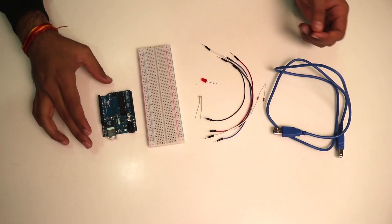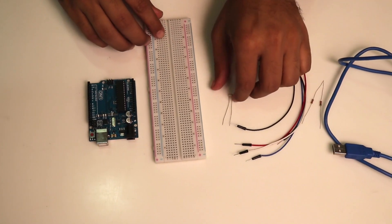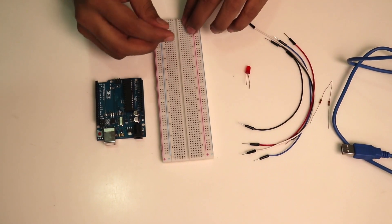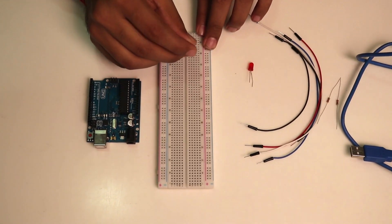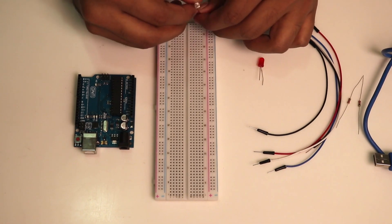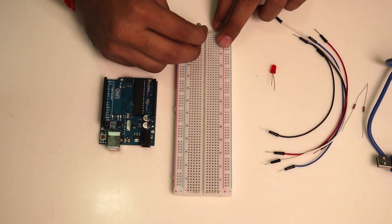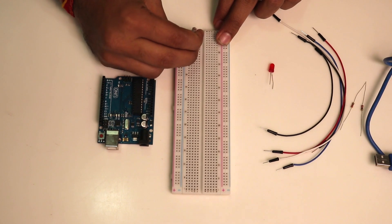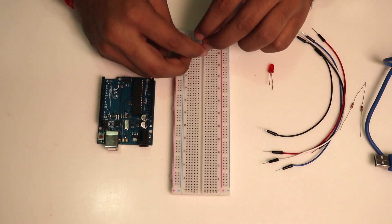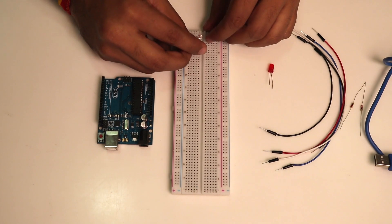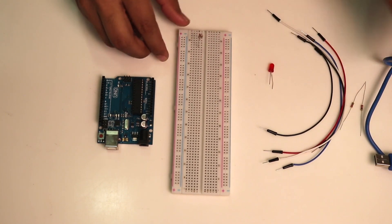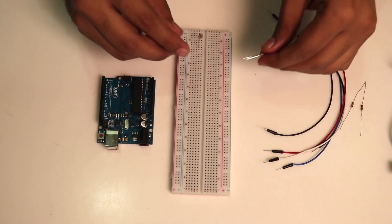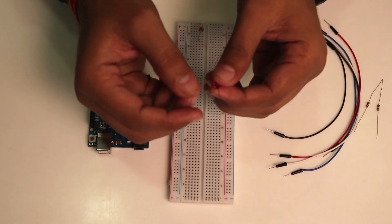Let's make the connections. Place the components on the breadboard - place the photoresistor and your LED. Ensure that the longer one is the positive pin of the LED and the shorter one is negative.